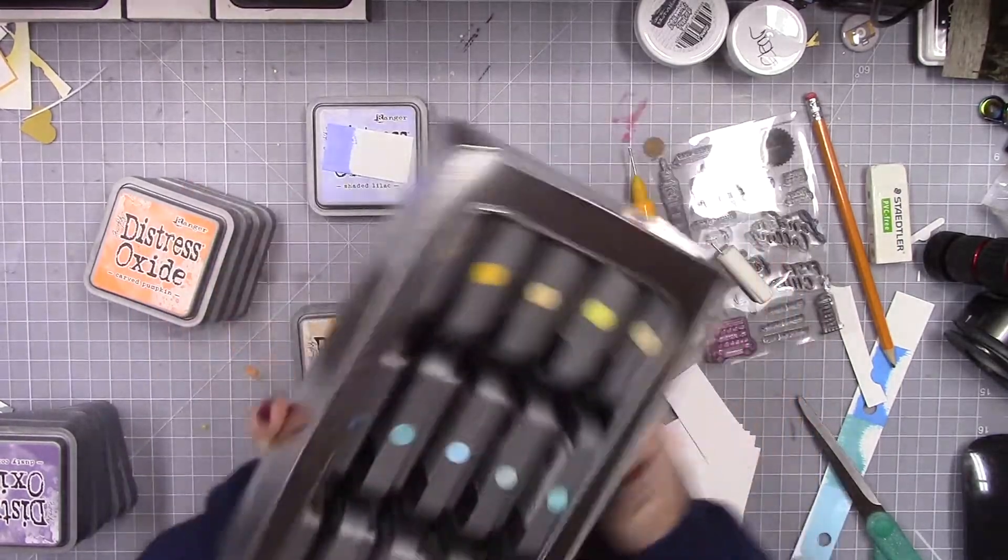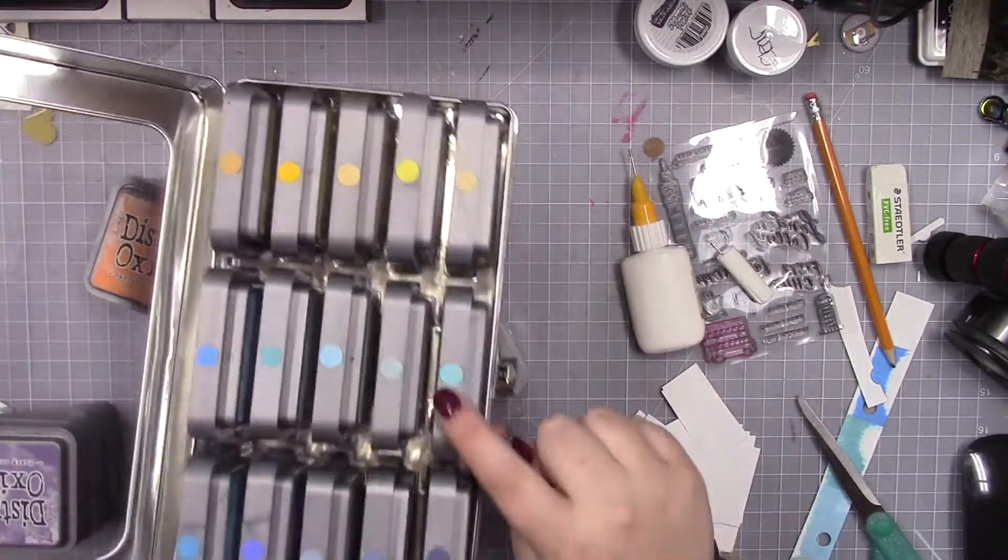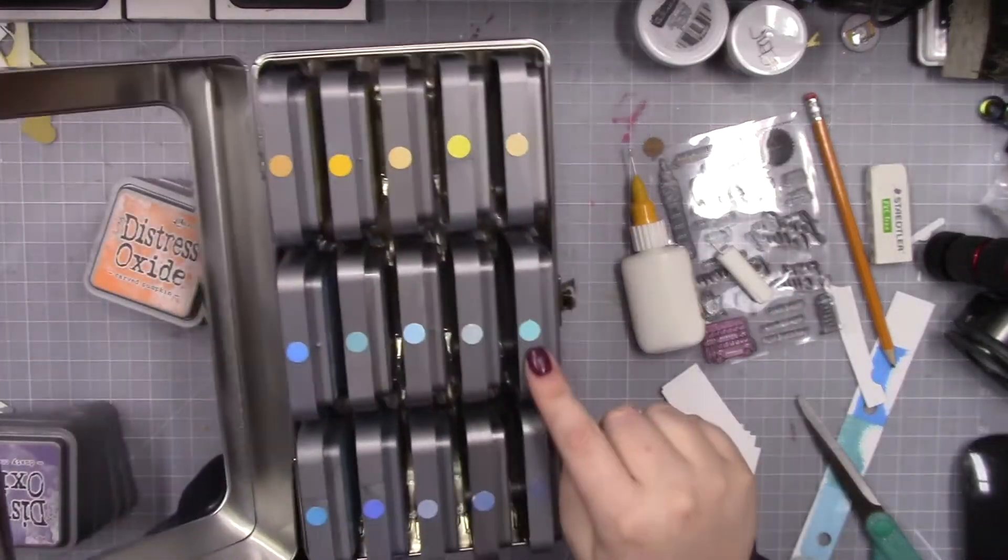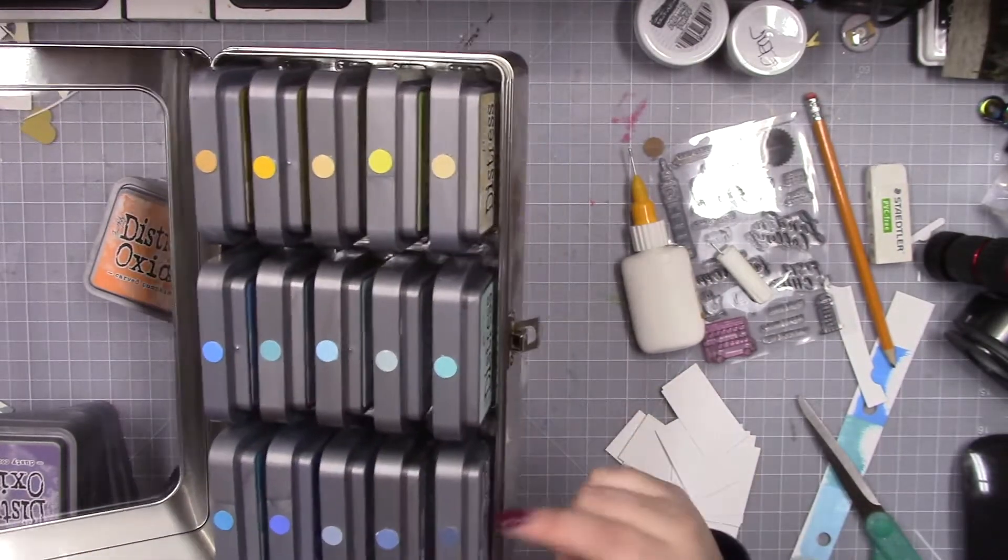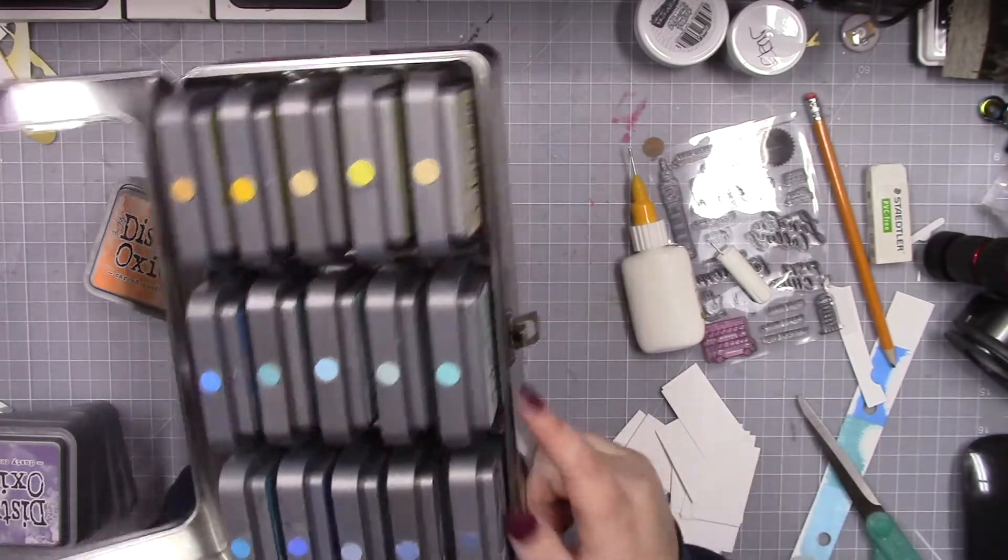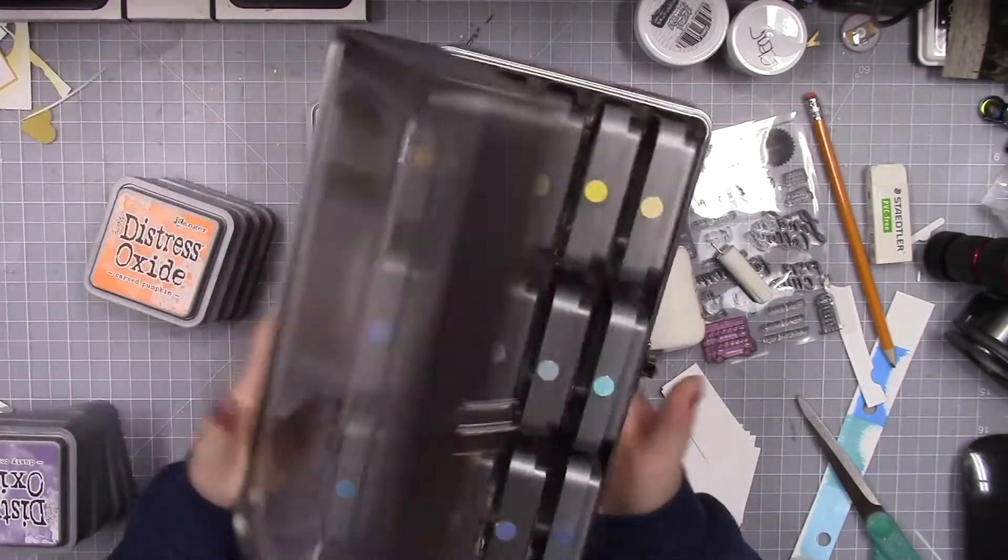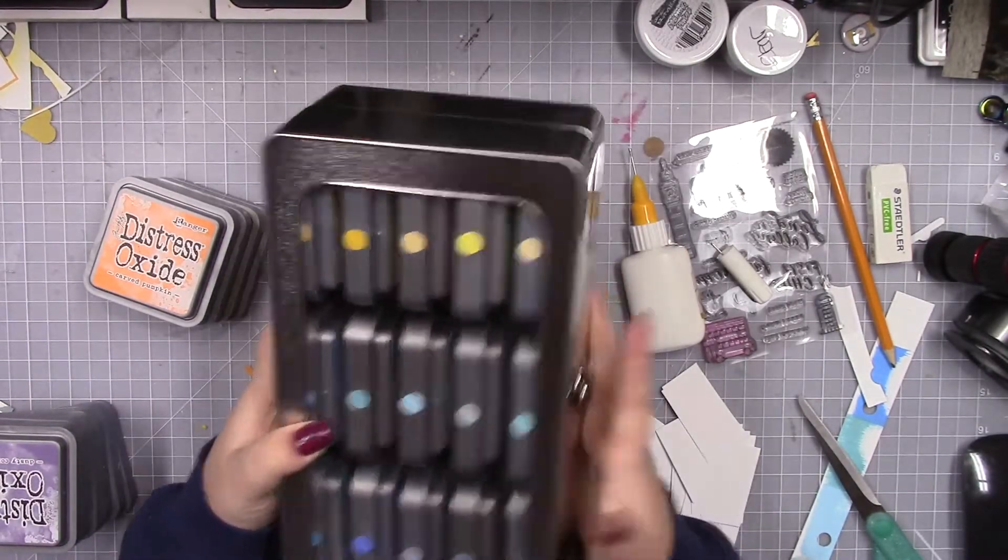All of my oxide inks are labeled with the actual color of the ink, not just the label color. These are the distress ink storage tins that fit